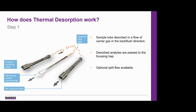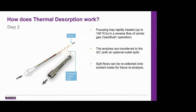During this stage, an optional split can be used for high concentration samples to reduce the concentration being introduced into the system. This optional split is recommended when performing direct desorption. During the second stage, the focusing trap is then rapidly heated at a rate of up to 100 degrees per second in a reverse flow of carrier gas — again a back flush operation. This enables the analytes to be transferred to the GC column as fast as possible for the sharpest chromatographic peaks. A split flow can also be used here for high concentration samples, and this also enables the recollection of samples onto sorbent tubes for archiving and future reanalysis.